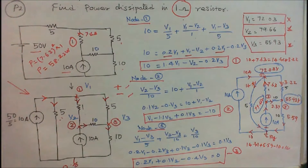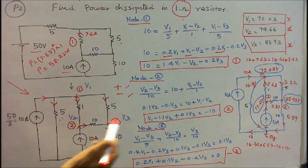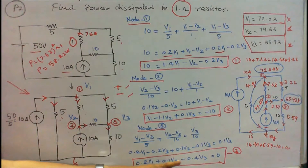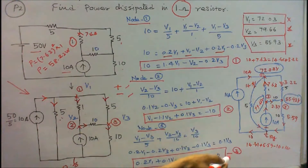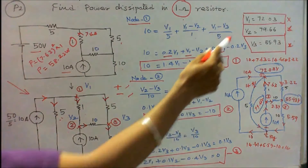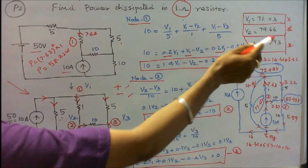Now I consider node 3. The equation is: V3/10 = (V1 - V3)/5 + (V2 - V3)/10. Simplifying: 0.2·V1 + 0.1·V2 - 0.4·V3 = 0. This is equation 3. Solving the three equations: V1 = 72.03 volts, V2 = 79.66 volts, V3 = 55.93 volts.